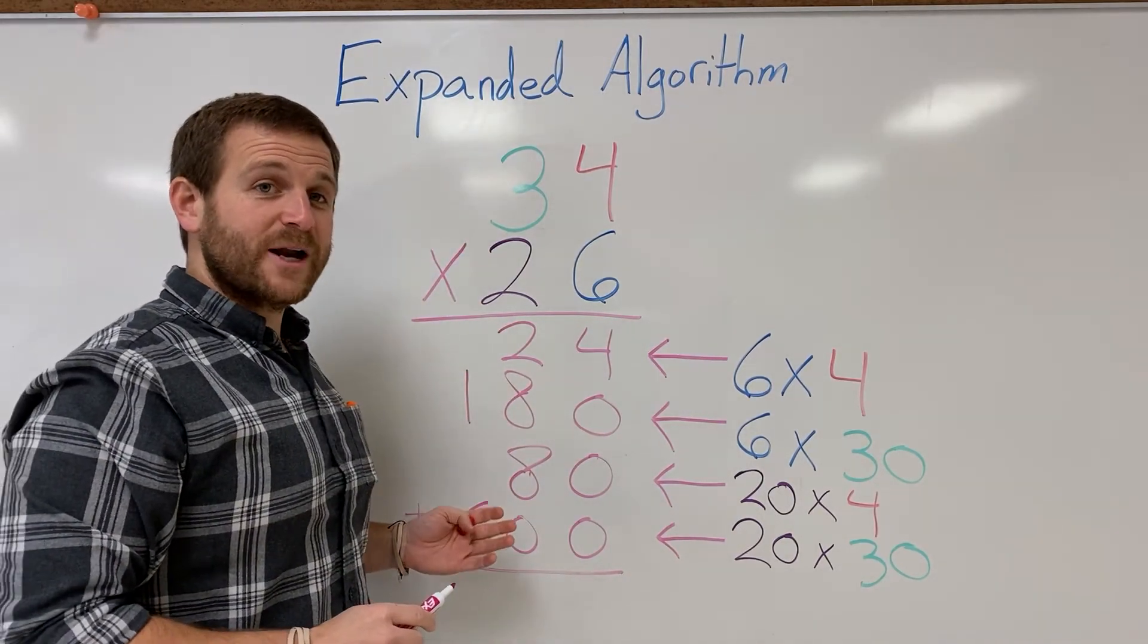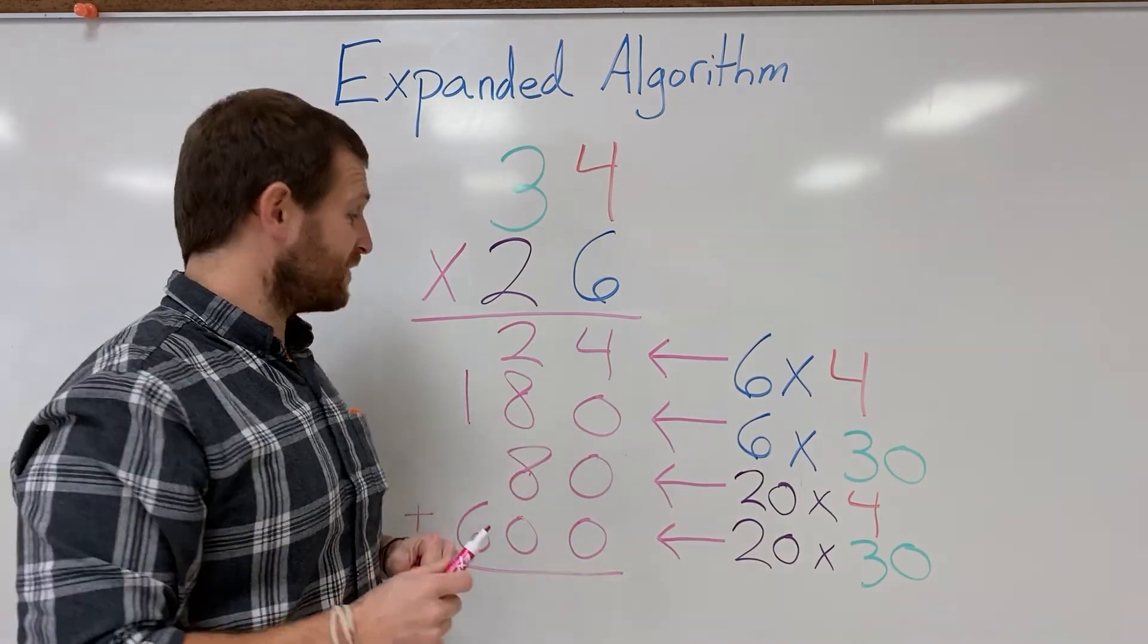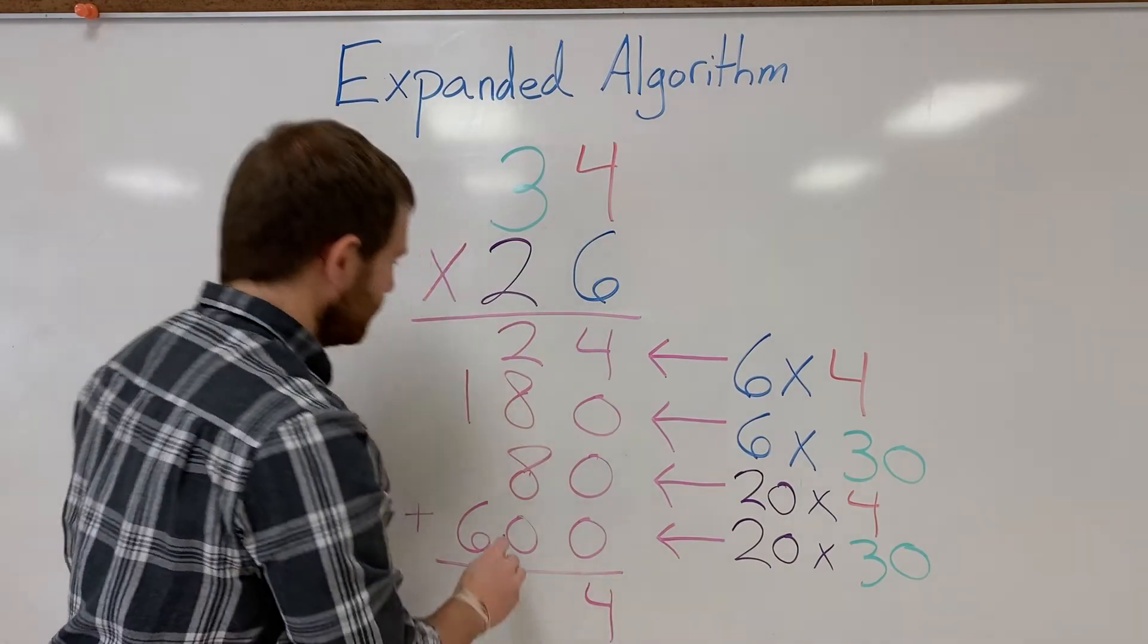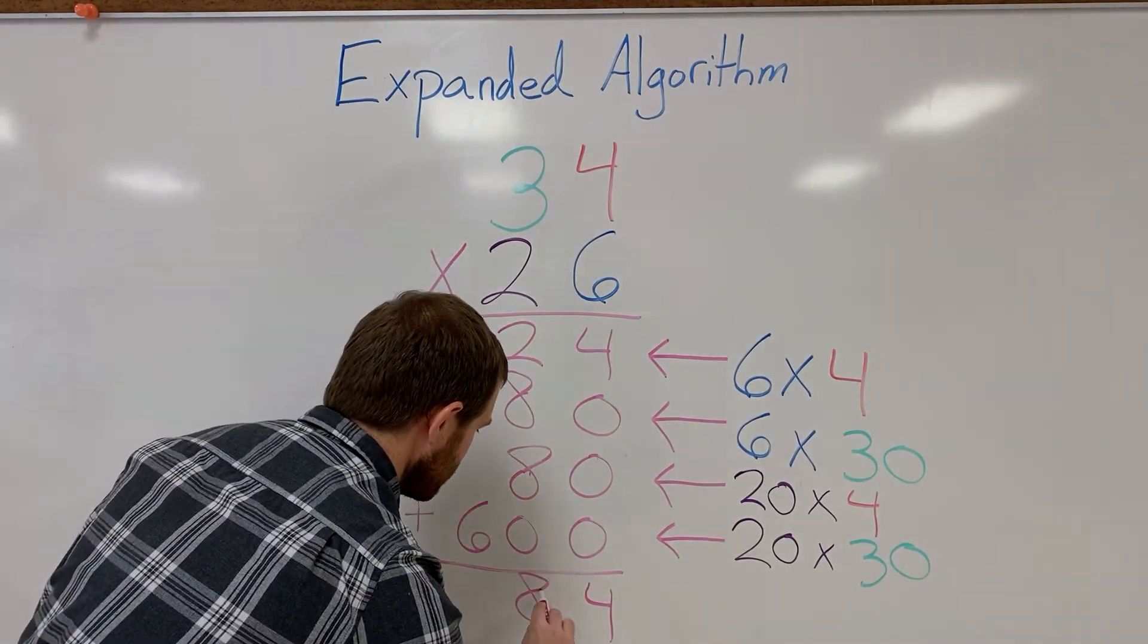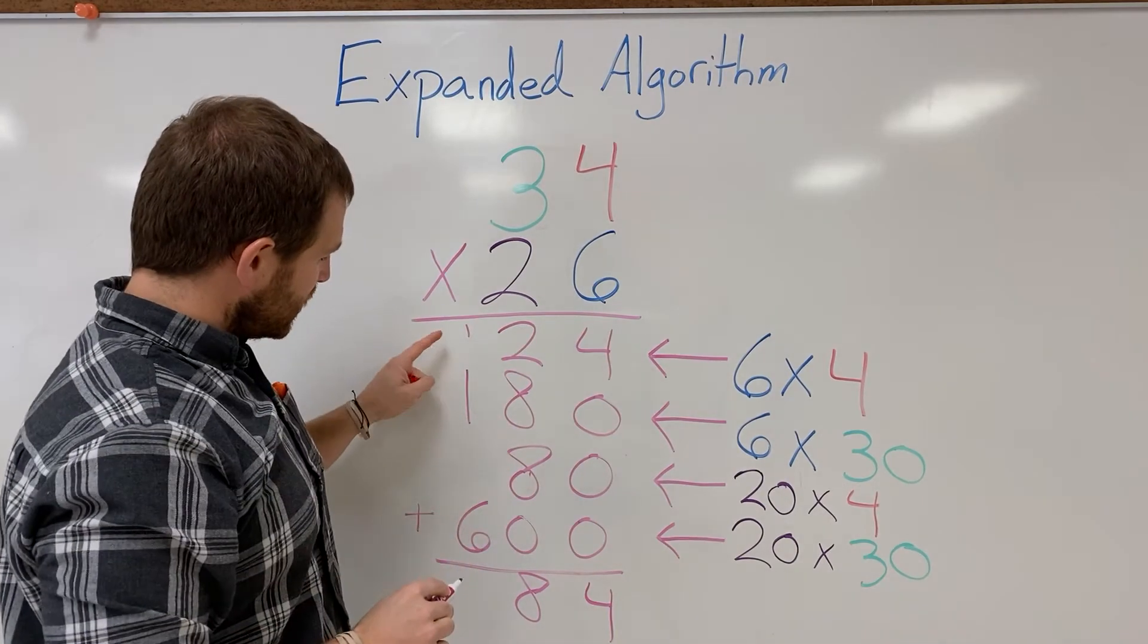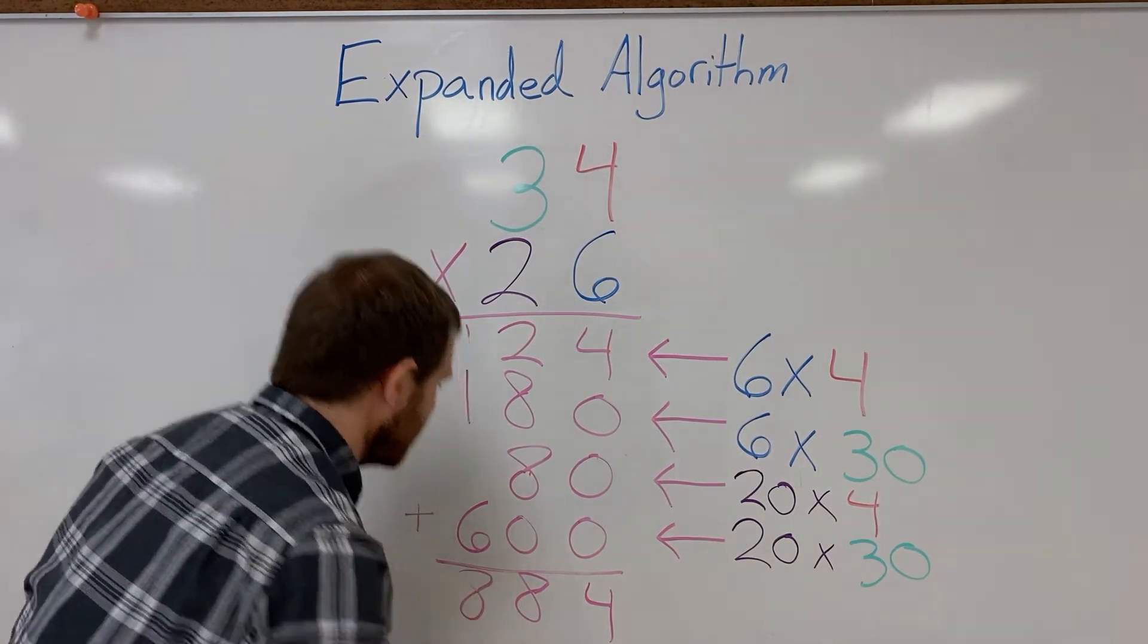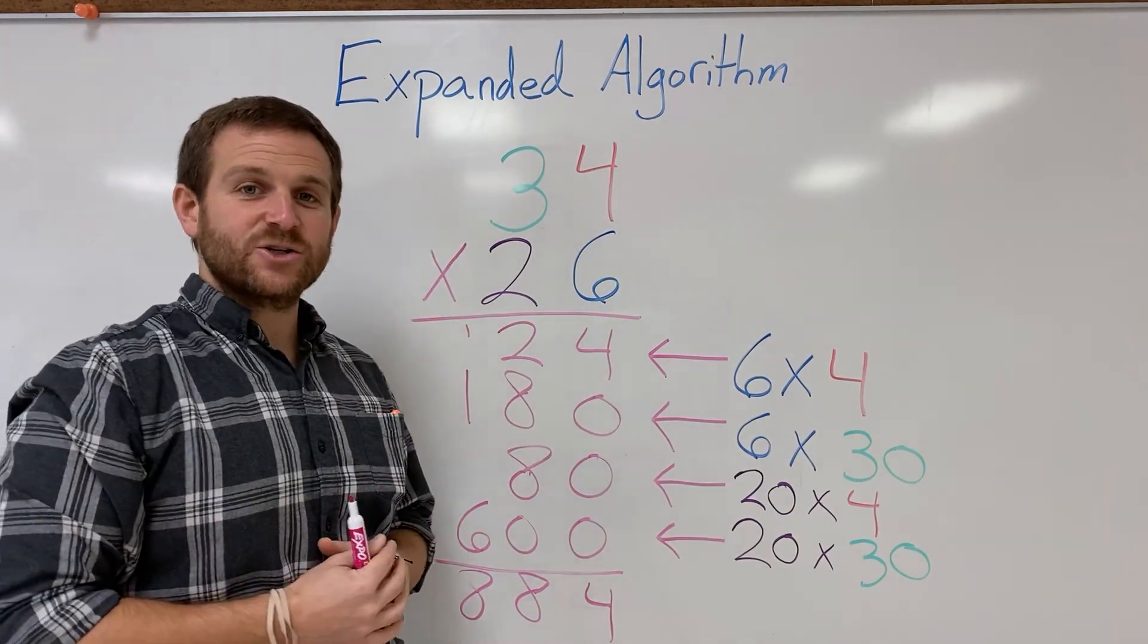These are my 4 partial products that I got from multiplying all that together. Last step, add them up and you'll get your final answer. 4 all the way down. I got 2 and 8 is 10, plus 8 is gonna be 18. Carry my 1. 1 and 1 is 2, plus 6 is gonna be another 8. 34 times 26 is gonna be 884.